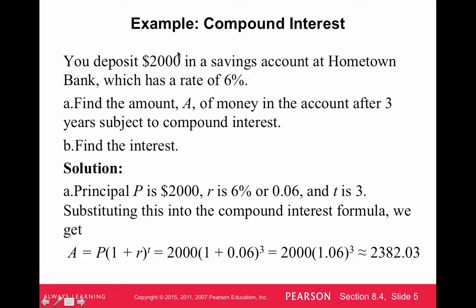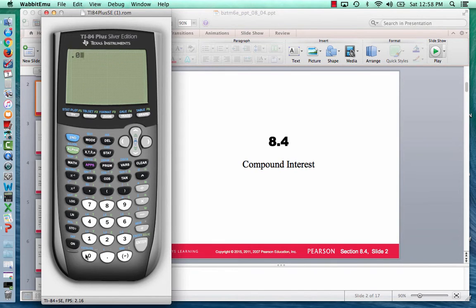Let's say you deposit $2,000 into a savings account at Hometown Bank, which has a rate of 6%. Find the amount of money in the account after three years subject to compound interest. To answer part A, we take 6% of $2,000 and add it on. So 0.06 times $2,000 gives us $120, giving us $2,120 after year one. Then taking 6% of that — this is the compounding part — in the second year we get $127 interest.